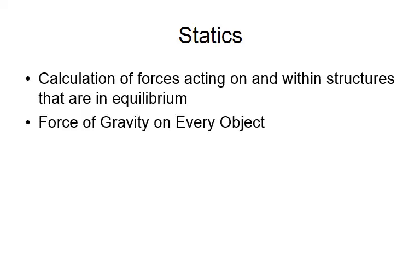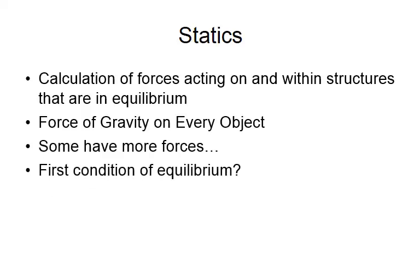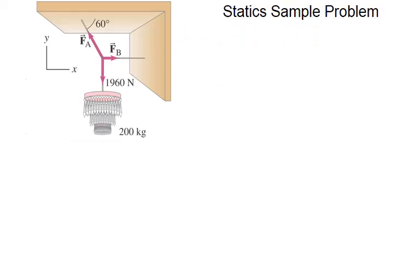The force of gravity is on every object. Some have more forces than others. When we talk about equilibrium, the first condition of equilibrium, we have to look at the fact that the sum of the forces in the X and Y are zero. Sometimes we'll have two equations for two unknowns.